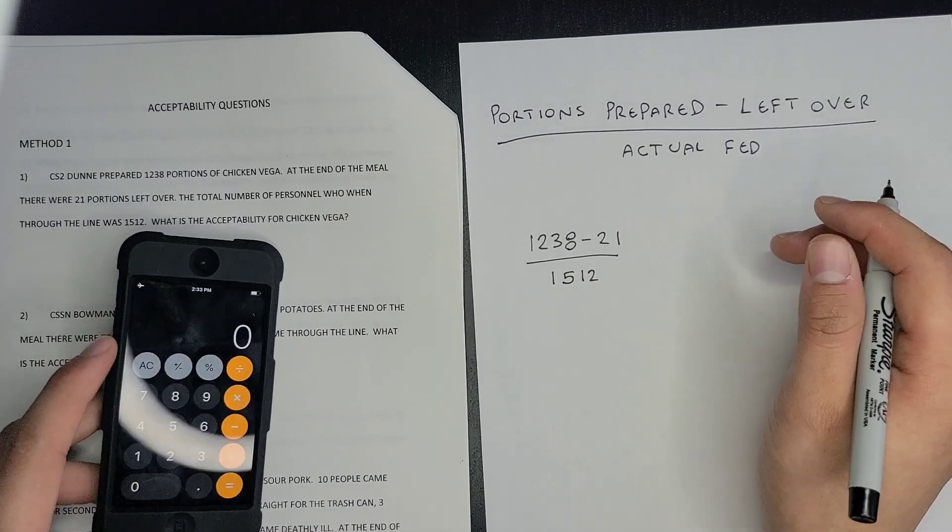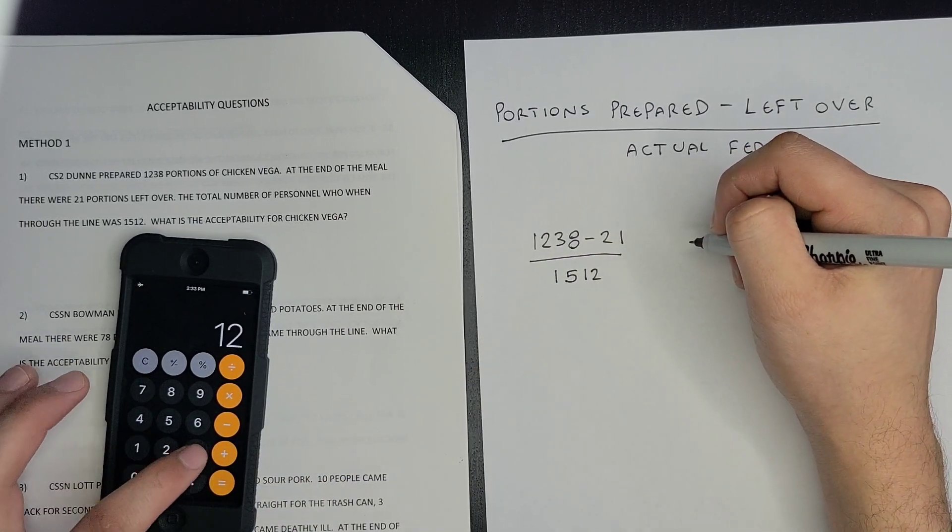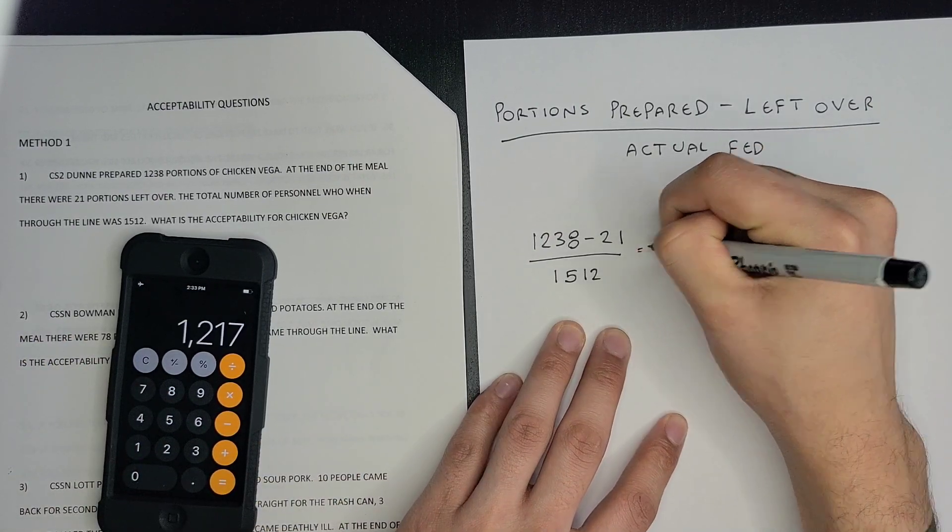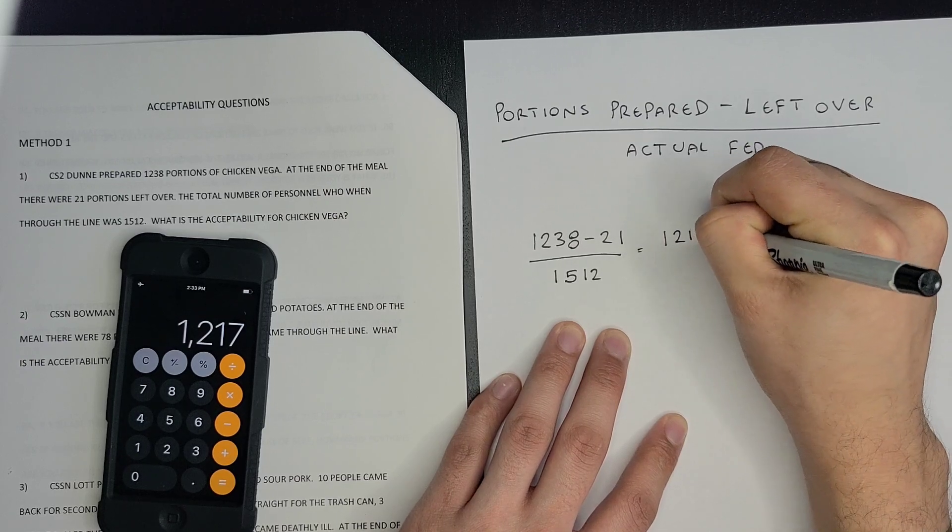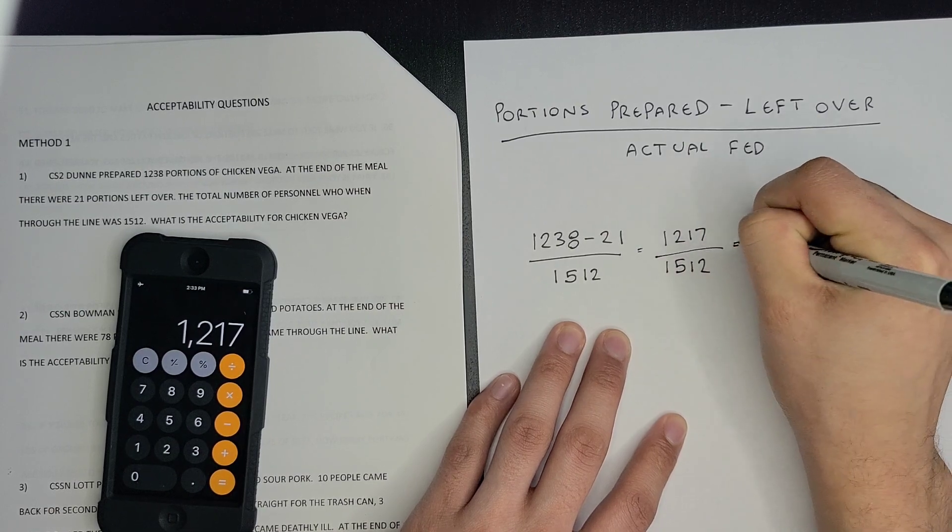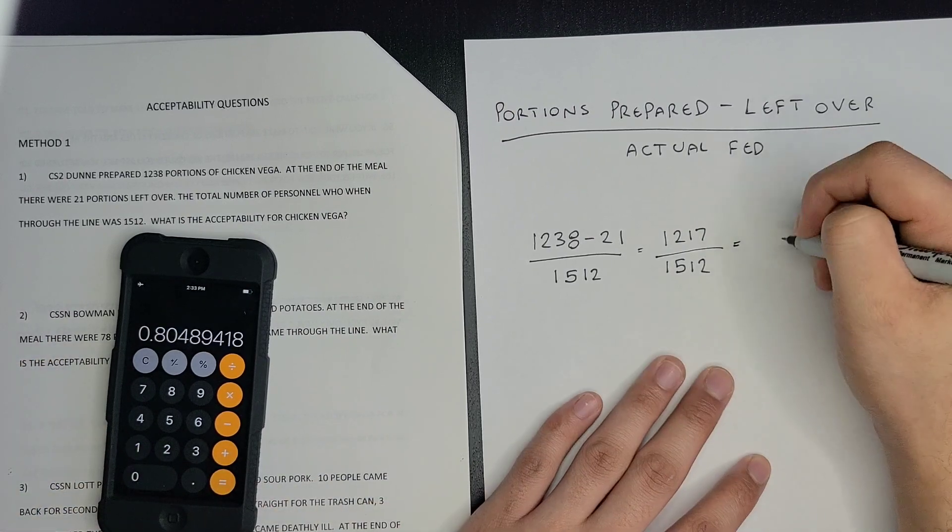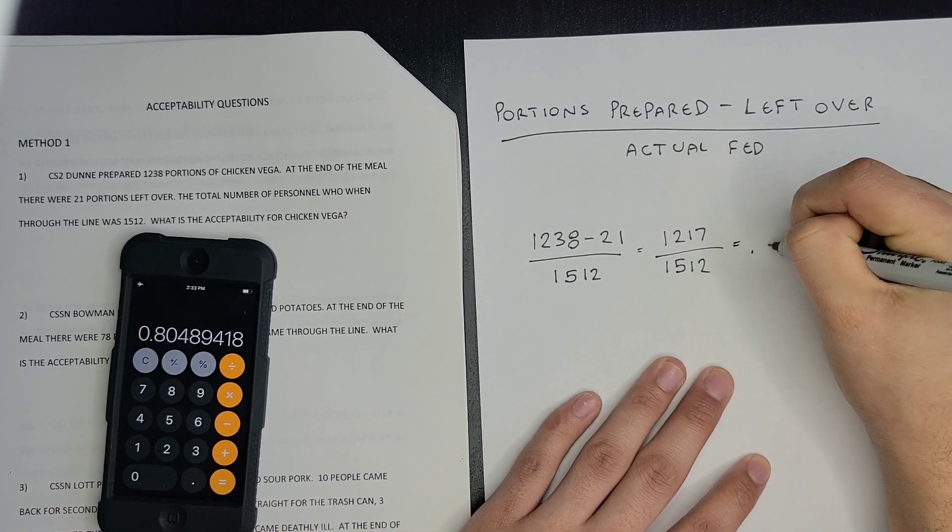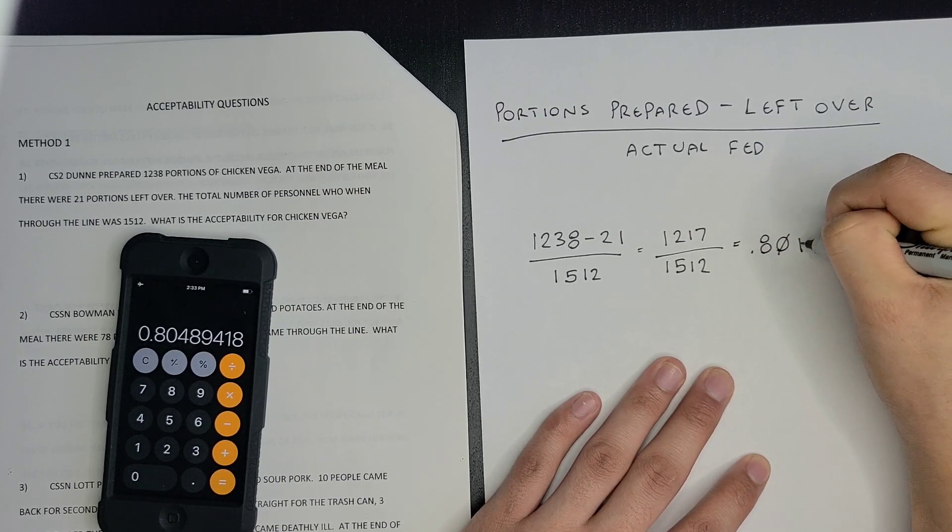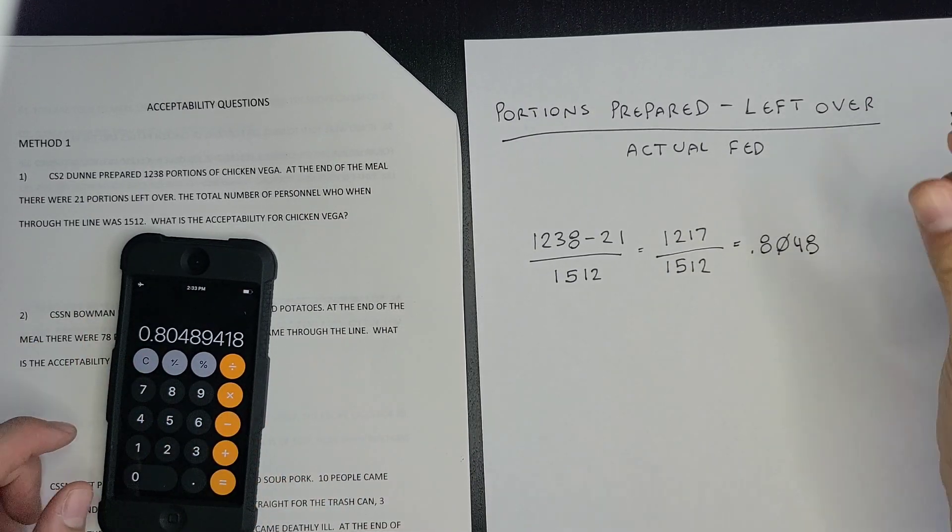After that, you get your calculator and subtract these two top numbers first. One thousand two hundred thirty-eight minus 21 equals one thousand two hundred and seventeen. Divide that by one thousand five hundred and twelve, which equals 0.8048.